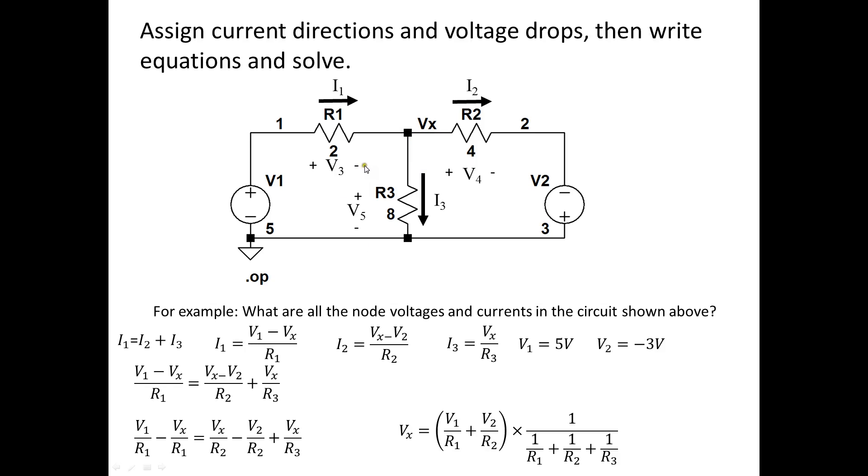Now, I want you to see I1 is going to equal V1 minus Vx divided by R1. And the reason why it's V1 minus Vx and not Vx minus V1 is I've defined the current going from positive to negative.